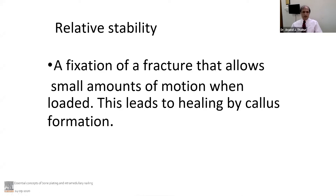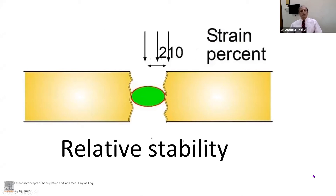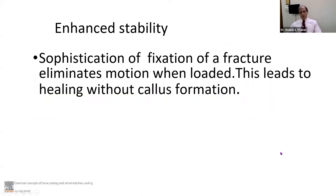When we fix in a way that some callus is seen, we have established what is called relative stability — the fixation of a fracture that allows small amounts of motion when loaded. This leads to healing by callus formation. In strain percentages, relative stability is between 2 and 10% — not too little, not too much. Between 2 and 10% is what we call relative stability.